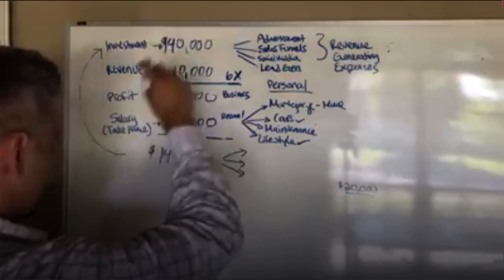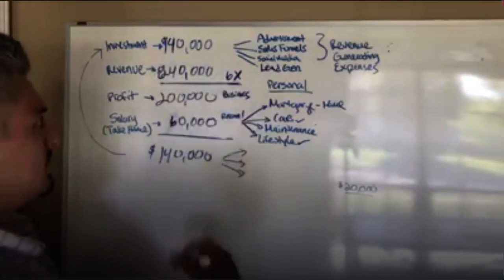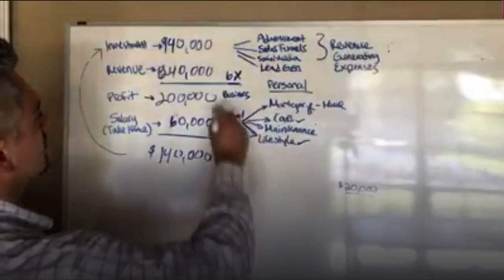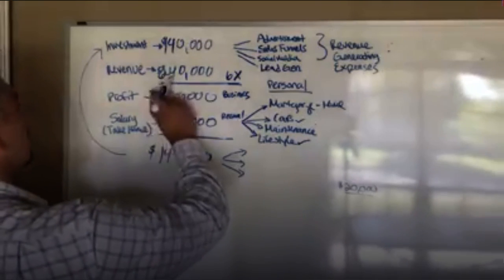This becomes $840,000 because you're still working as hard. You're just pouring more money into the business. It's still the same 6X. This becomes $700,000.